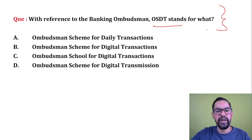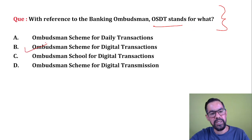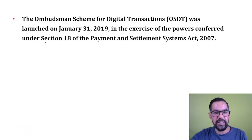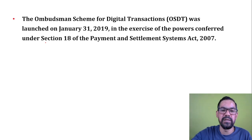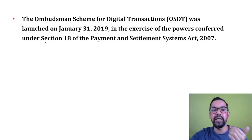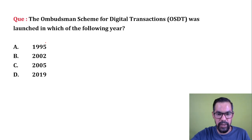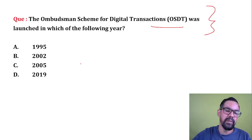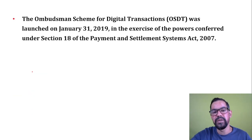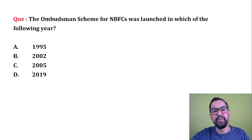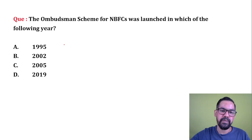Next question: OSDT stands for what? OSDT stands for Ombudsman Scheme for Digital Transaction — option B is correct. It was passed in 2019 and works under Section 18 of Payment and Settlement Systems Act 2007. Its launch date was 31st January 2019. If you have any case related to digital transactions and the bank is not listening, you can approach the ombudsman.